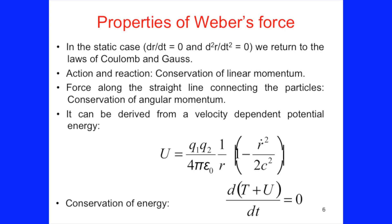What are the main properties of Weber's electrodynamics? When there is no relative motion — when the charges are at rest — dr/dt and the acceleration go to zero, and we return to Coulomb's force and Gauss's law of electrostatics. It follows action and reaction, so there is conservation of linear momentum. Moreover, the force is along the straight line connecting the two particles, so there is also conservation of angular momentum. Two years later, Weber showed his force could be deduced from a velocity-dependent potential energy — the first potential energy in physics depending not only on distance, but also on velocity.